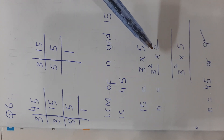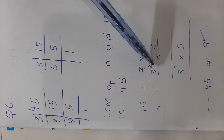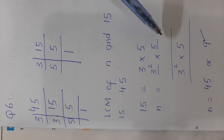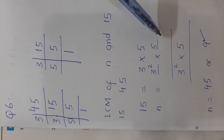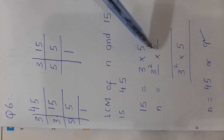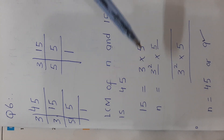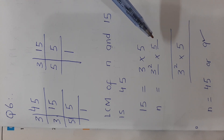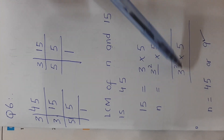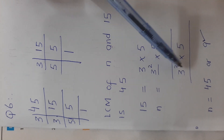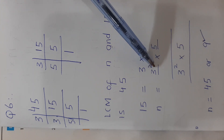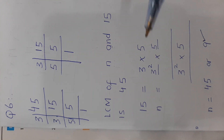We need to determine what possibilities n can have. We need to take the LCM, and to find the LCM we take the maximum power from each column. Since the LCM of n and 15 must equal 45, and 45 = 5 × 9 = 5 × 3², we may write 3² in the column for n.